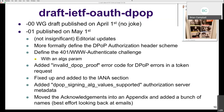A new error code was added for errors in the token request. The IANA section was expanded to register various pieces, which helped identify previously undefined elements like the authorization header scheme. An authorization server metadata parameter was added — an array of JWS algorithms supported by the AS. Acknowledgments were moved to an appendix.